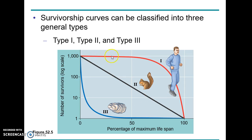Comparing survivorship across species: human beings show a large number being born, living a relatively constant life, and then dropping off close to age 80 or 90 - this is indicative of a Type I survivorship curve. Squirrels have a more steady, gradual decline until close to 100% mortality. Mollusks are very interesting - a large proportion of the young ones are killed off very quickly because these organisms lay their eggs in water and fertilization takes place outside the body.